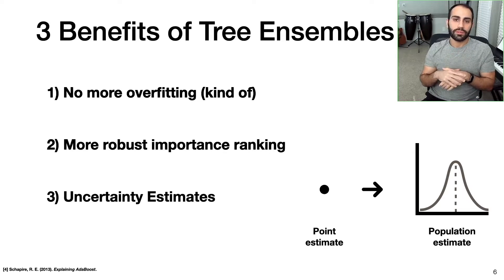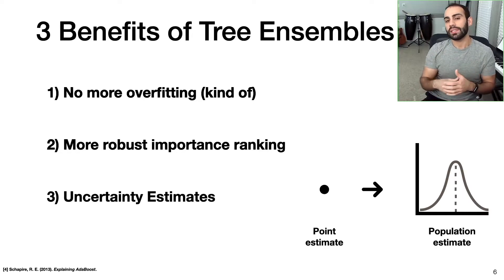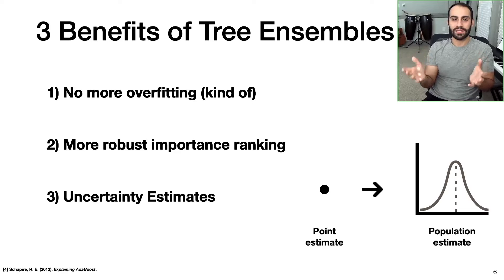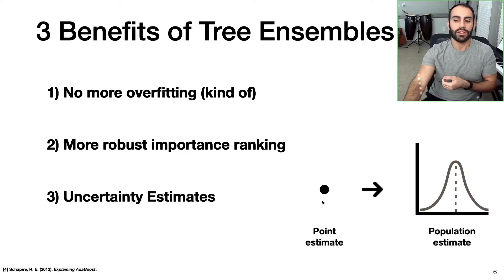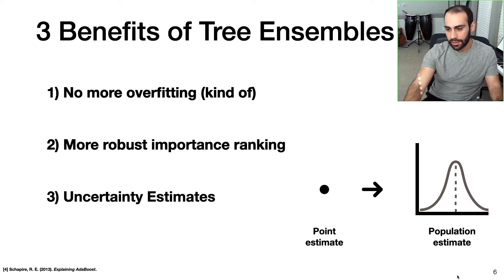The last key benefit of decision tree ensembles is that through population estimates, we have a straightforward way to quantify our confidence or uncertainty in our model's predictions. Anytime you want to use your model in the real world where there are physical consequences, it's good to have some measure of uncertainty so you know your exposure. With just a point estimate, you don't really know the confidence of your prediction — it could be zero uncertainty or infinite uncertainty.